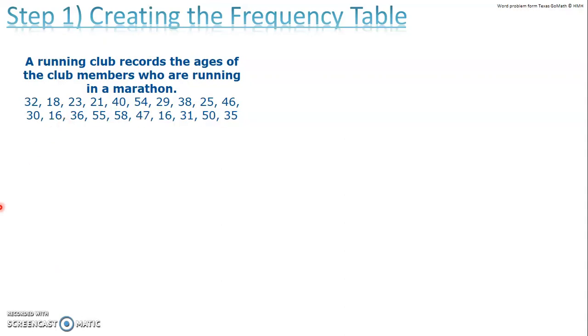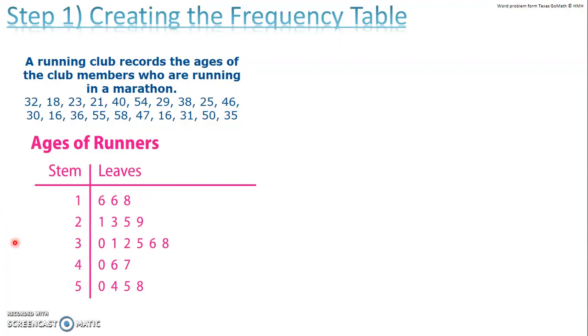Now on yesterday's lesson, you saw what a stem and leaf plot looks like. So if I did a stem and leaf plot for this data, it looks something like this. So remember, a stem of 1 and a leaf of 6 means 16. A stem of 1 and a leaf of 8 means 18. There's two 6s, so that means there's two 16s in my data set. And it goes all the way through.